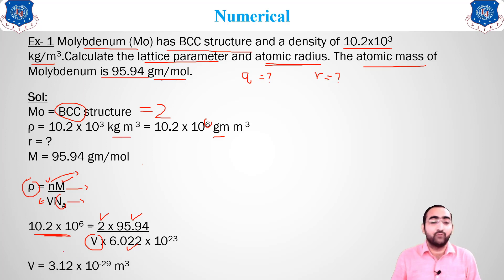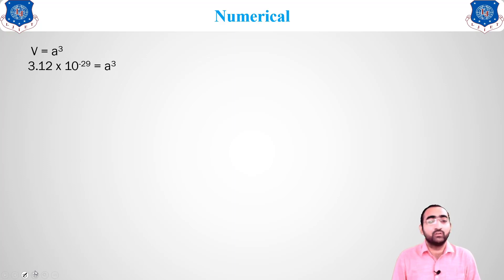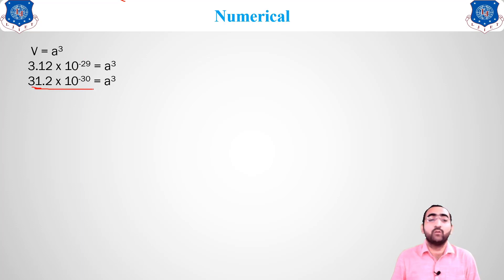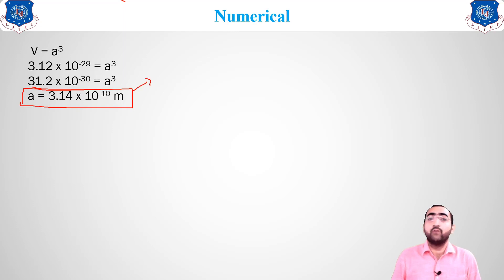We find V = 3.12 × 10⁻²⁹ m³. Since the volume of a cube is V = a³, we need the cube root. Converting: 3.12 × 10⁻²⁹ = 31.2 × 10⁻³⁰. Taking the cube root gives a = 3.14 × 10⁻¹⁰ m. This is the side length of the cube — the lattice parameter.